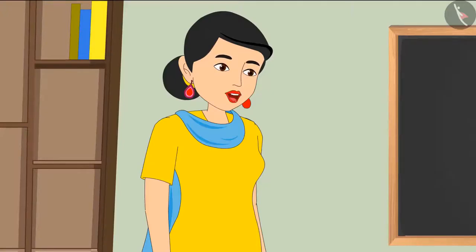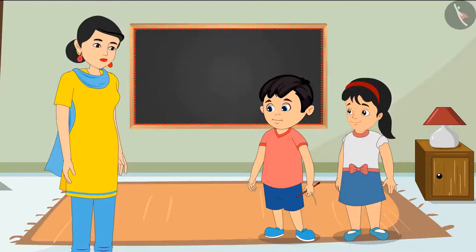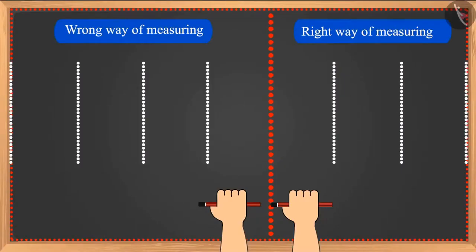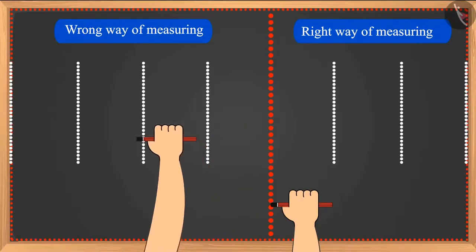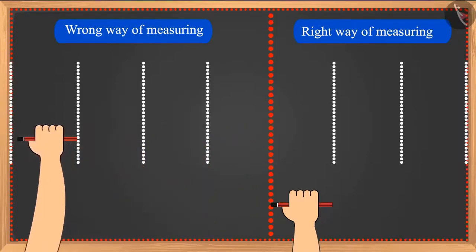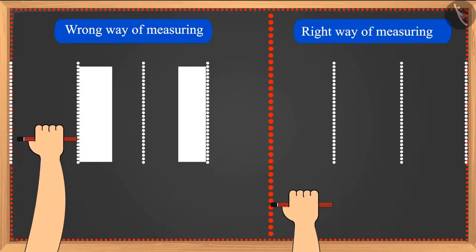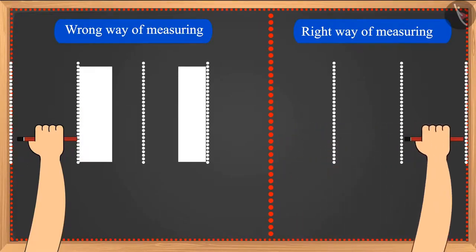Mother divides Chotu and Pinky's space equally between them. The mistake Chotu made was leaving spaces between two pencils while measuring, so he did not measure the entire length. We should measure without leaving any blank space.